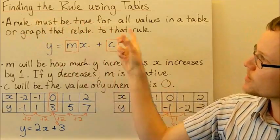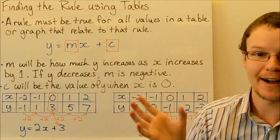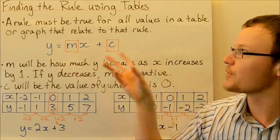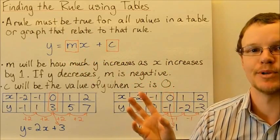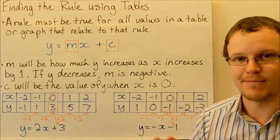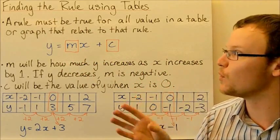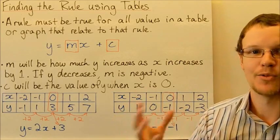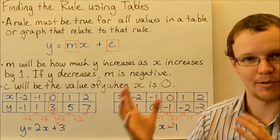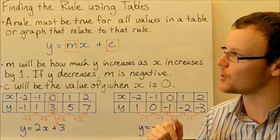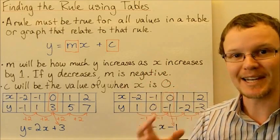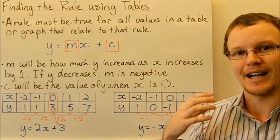A rule must be true for all values in a table or a graph that relate to that rule. It can't be true for some of them — it must be true for all of them. Otherwise it would not be a rule or a relationship; no relationship would be shown between them.